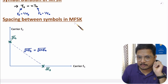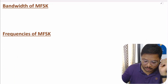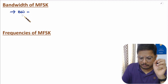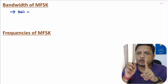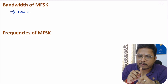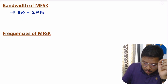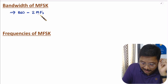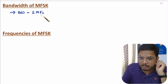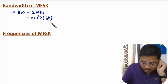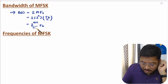Bandwidth of M-array FSK can be calculated based on the Nyquist rate. As per Nyquist, bandwidth equals 2 times symbol frequency. With M symbols, bandwidth equals 2M·fs. Since M = 2^n and fs = fb/n, substituting gives bandwidth = (2^(n+1)/n)·fb. So the bandwidth of M-array FSK is quite large — this is its disadvantage, though higher Euclidean distance between symbols is its advantage.